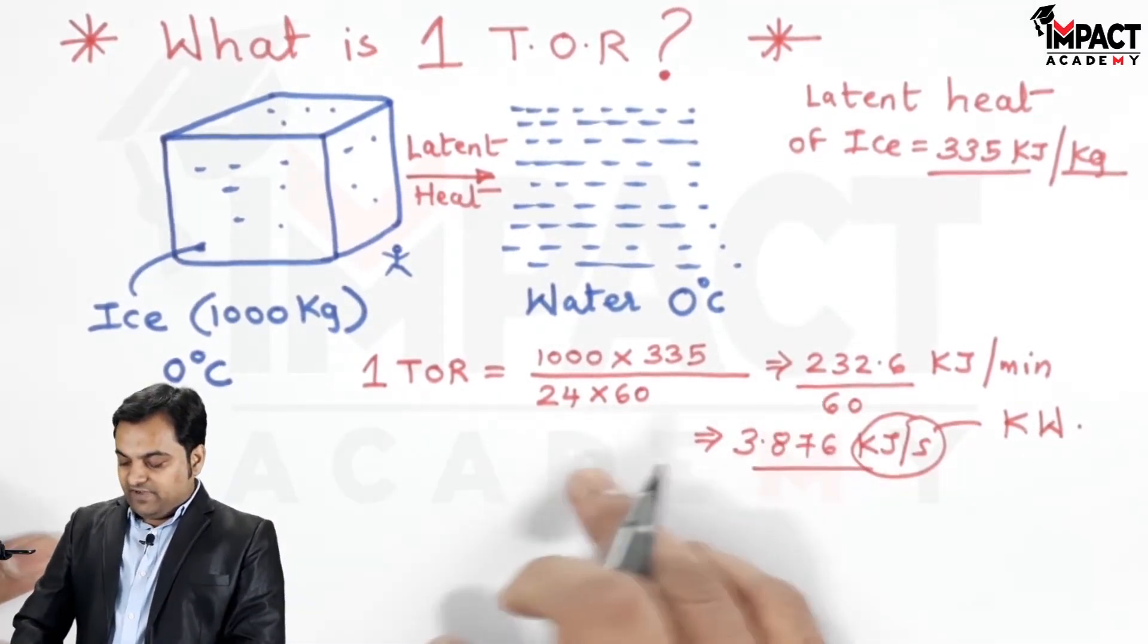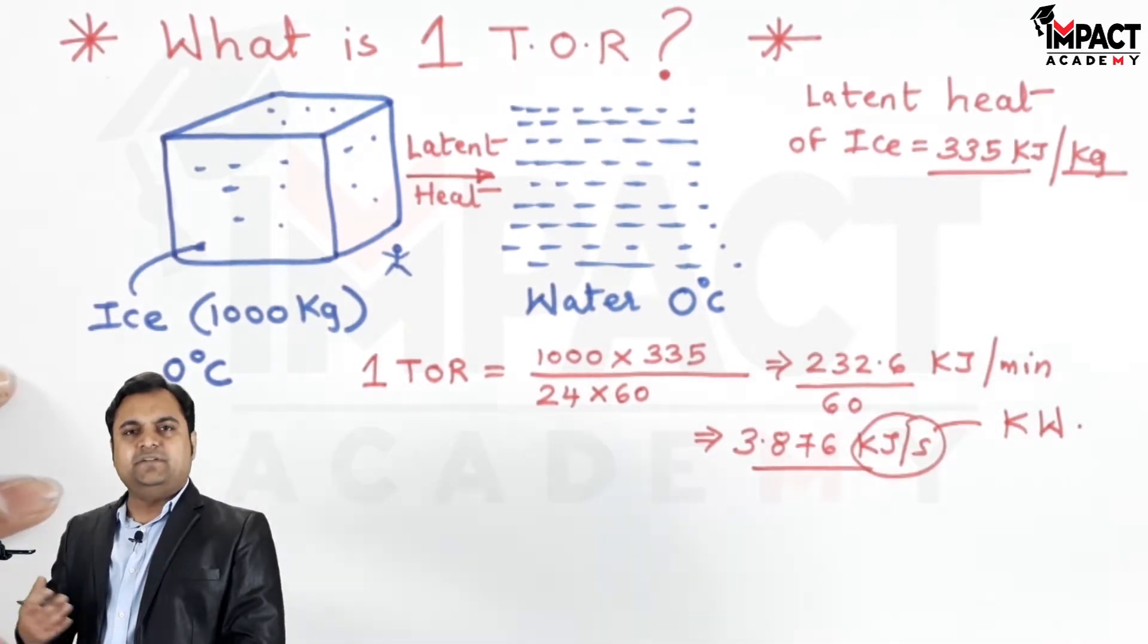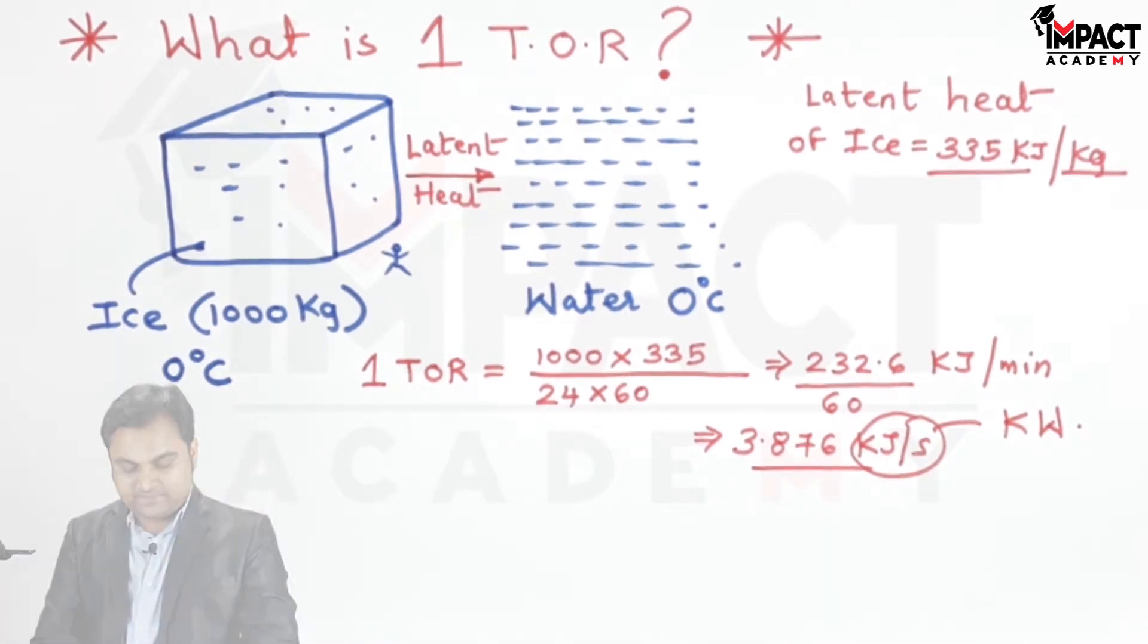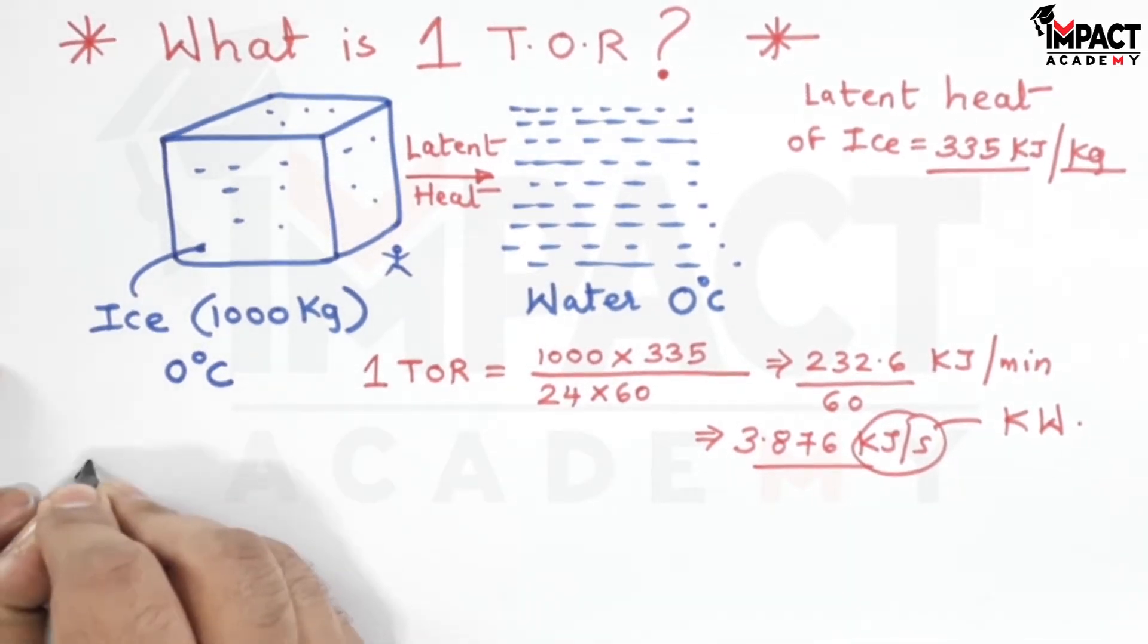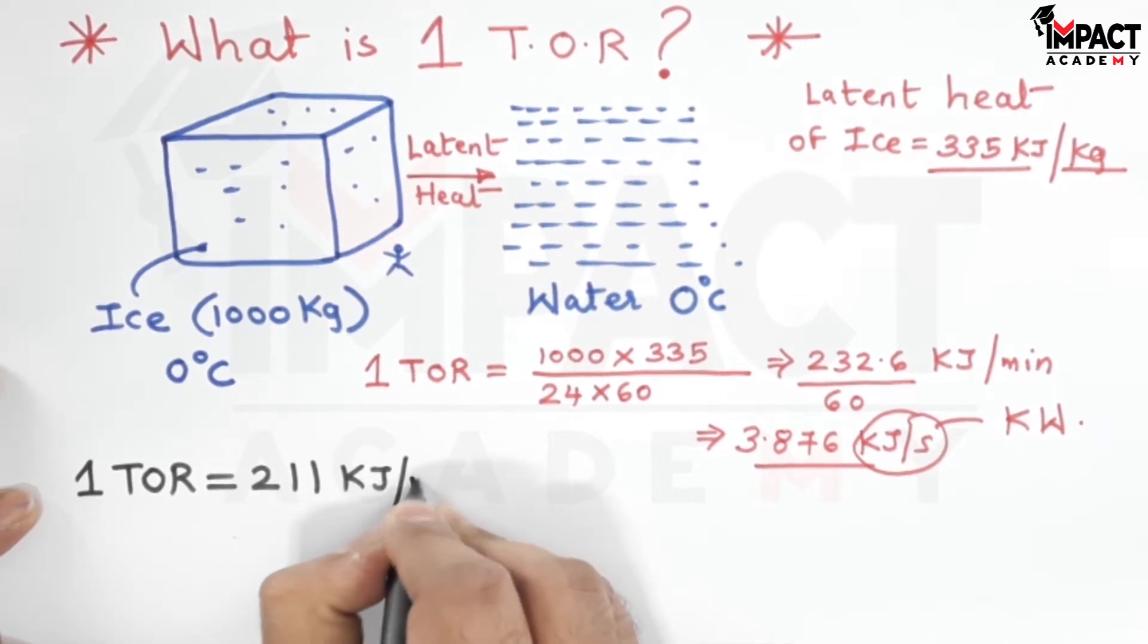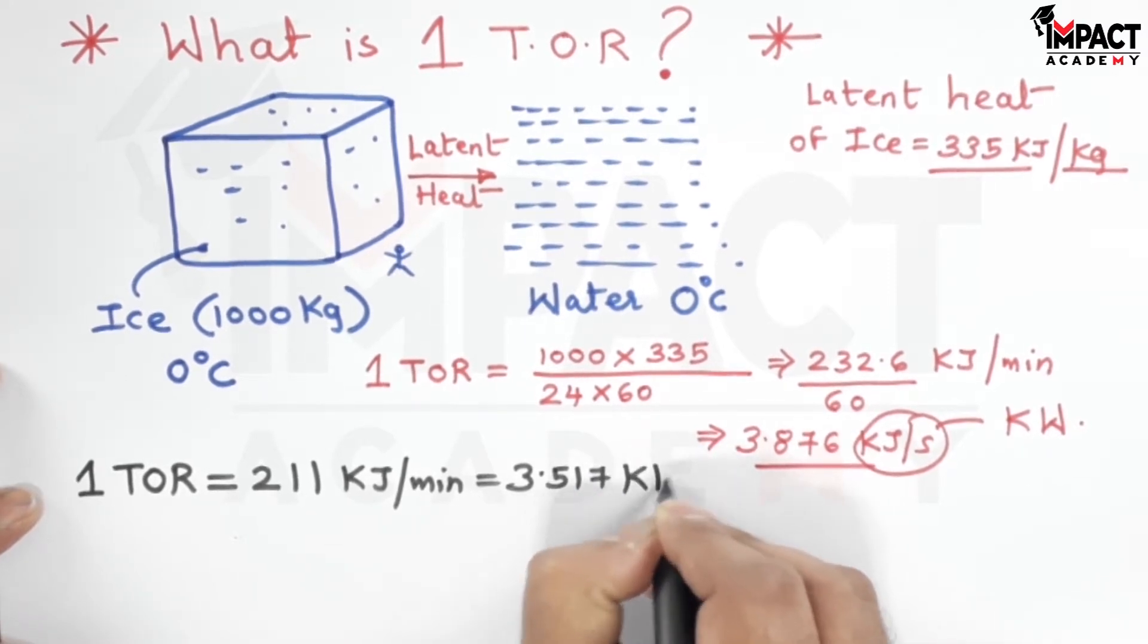Now these are the values which I'm getting, but with the help of some experiments and practical readings, one ton of refrigeration is taken as 211 kilojoules per minute, and it is equivalent to 3.517 kilowatts.